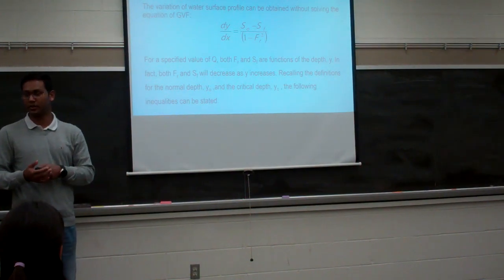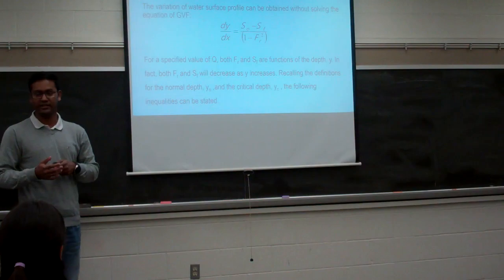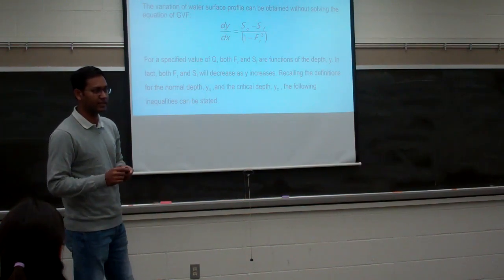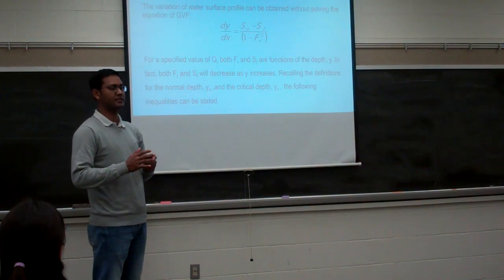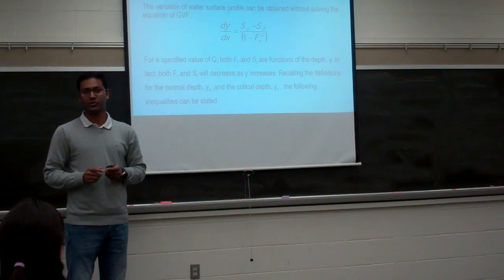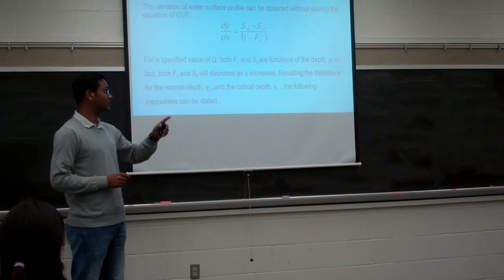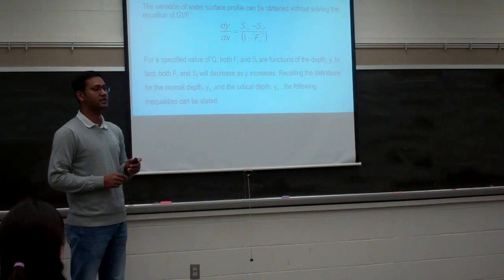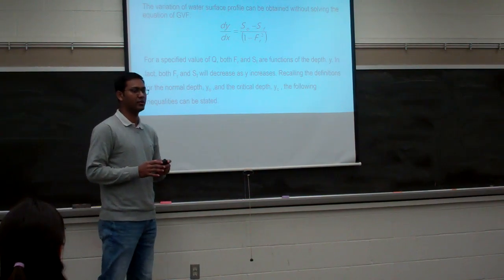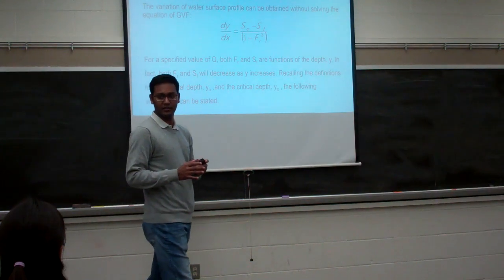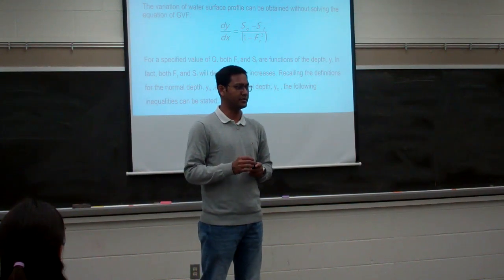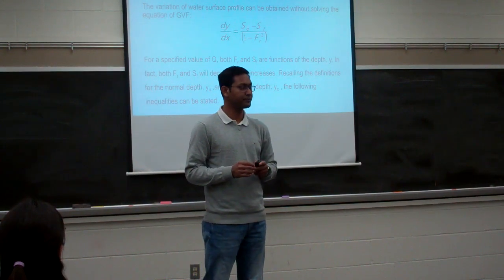Fr is the Froude number. If the Froude number is less than 1, it is subcritical flow. If it is 1, it is critical. And if it is greater than 1, it is supercritical flow. So based on this information, we will calculate whether the flow profile is one of the 13 types.